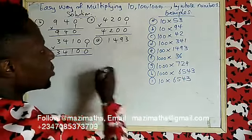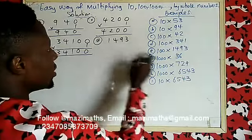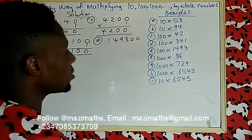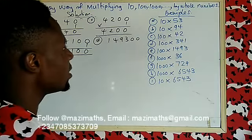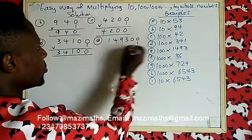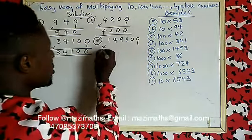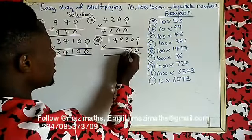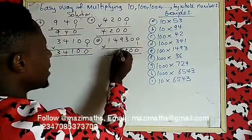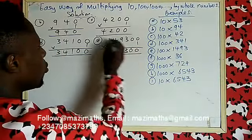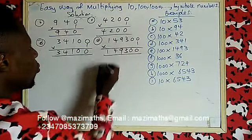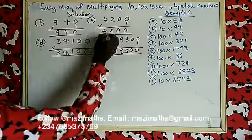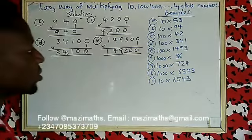Example E: 1493 times 100. That's two zeros — put them at the back of 1493. Then multiply by one: one times three is three, one times nine is nine, one times four is four, one times one is one. Your answer is 149300.